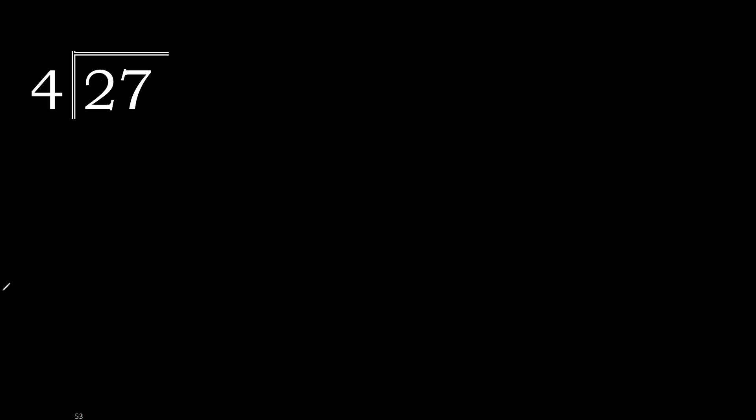27 divided by 4. 2 is less, therefore move to the next. 27 is not less, therefore with 27: 4 multiply by which number is nearest to 27